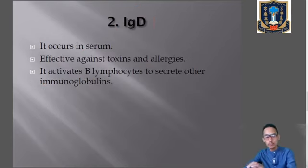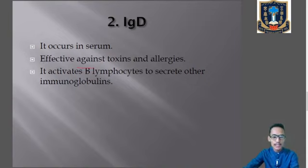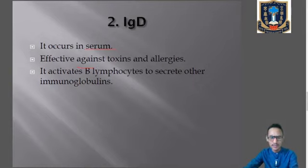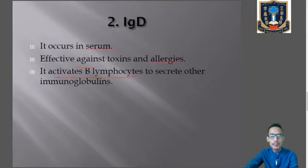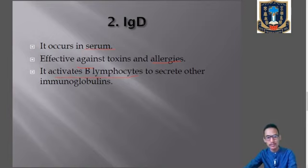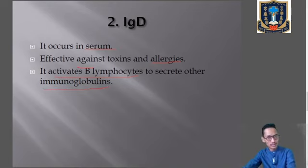Number two is IgD. IgD occurs in serum and is effective against toxins and allergies. This IgD will also activate B lymphocytes, which are the cells that trigger the formation of antibody or immunoglobulins.